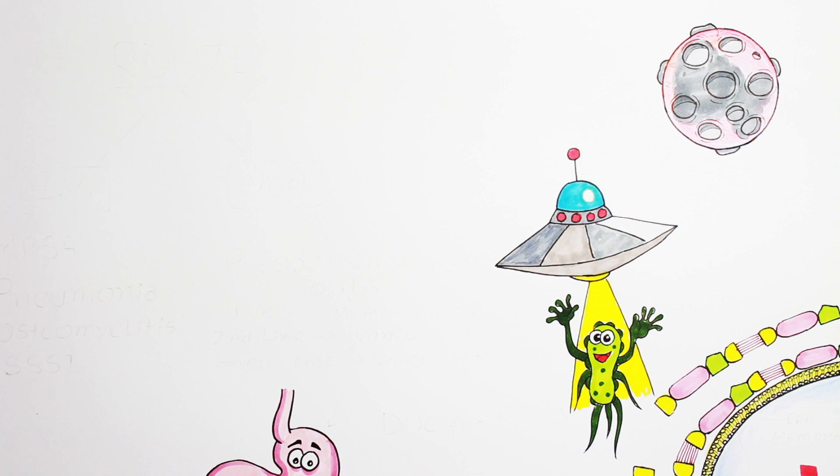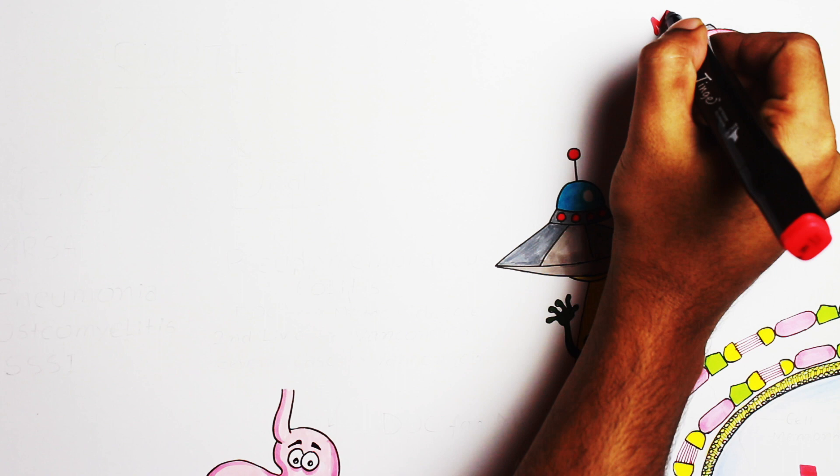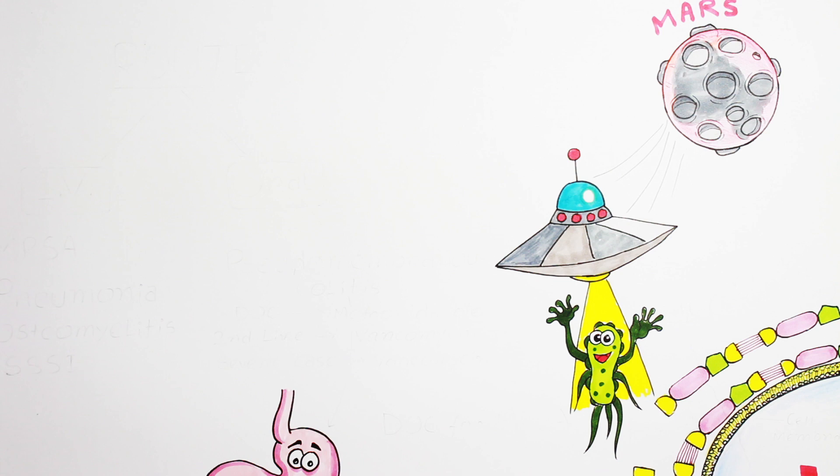Let's start with the pictorial presentation. Here you can see I have drawn a planet Mars and here is the naughty bacteria. As it is coming from Mars, we can call it MRSA. I think you all know the full form of MRSA - it is methicillin-resistant Staphylococcus aureus, a superbug resistant to most penicillin drugs.